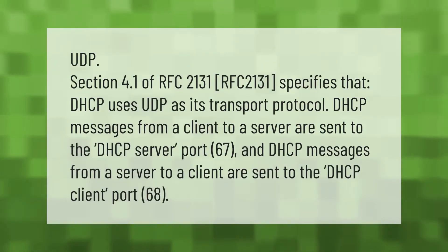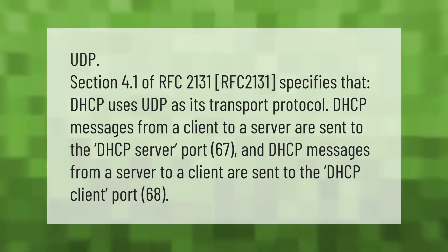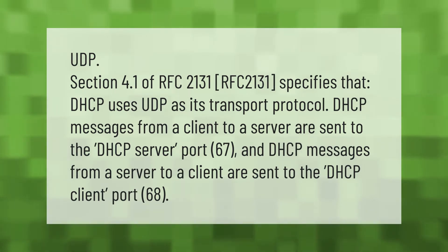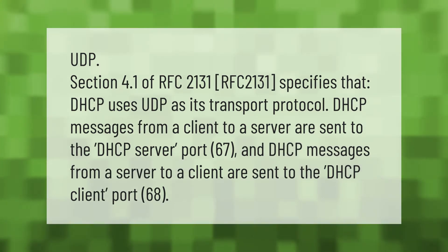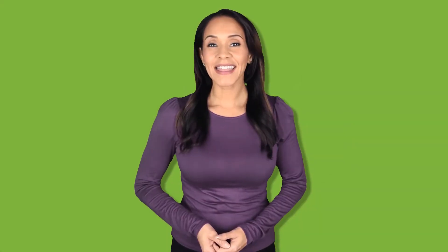Section 4.1 of RFC 2131 specifies that DHCP uses UDP as its transport protocol. DHCP messages from a client to a server are sent to DHCP server port 67, and DHCP messages from a server to a client are sent to DHCP client port 68.